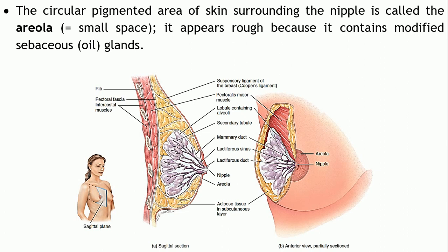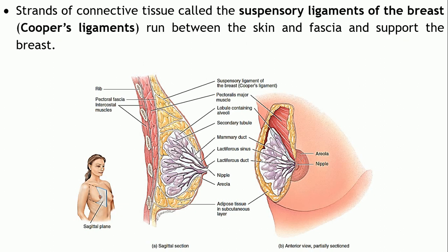Surrounding the nipple there is a pigmented area of skin known as the areola. Areola means small space, and it appears rough because it comprises modified sebaceous glands, that is oil glands.